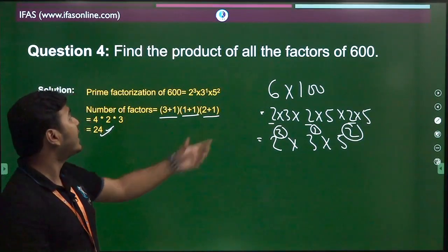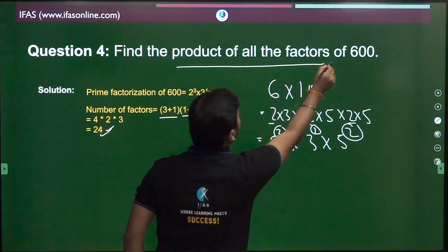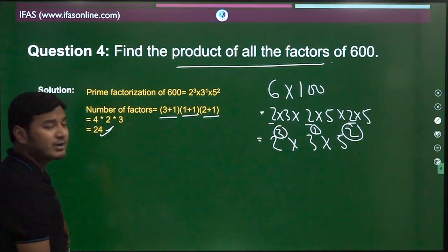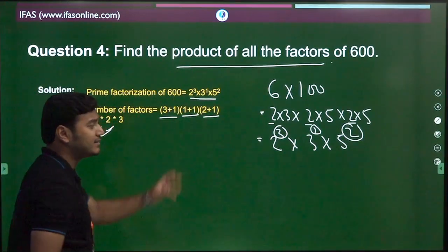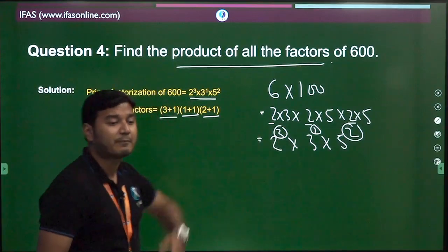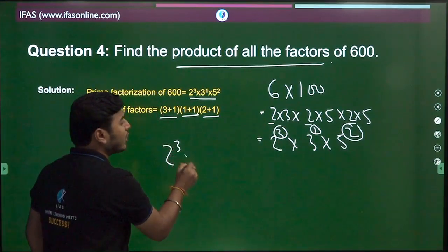Now what do you have to find? The product of all the factors. You know the factorization that we got—the things that were here—write it like this.